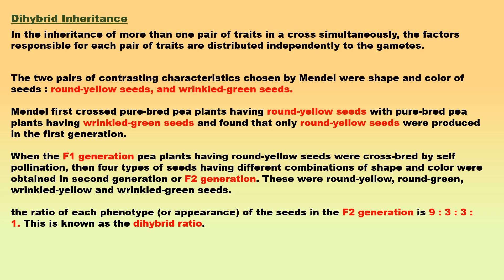Mendel first crossed purebred pea plants having round yellow seeds with purebred pea plants having wrinkled green seeds and found that only round yellow seeds were produced in the first generation. No wrinkled green seeds were obtained in the F1 generation. From this it was concluded that round shape and yellow color of the seeds were dominant traits over the wrinkled shape and green color. When the F1 generation pea plants having round yellow seeds were crossbred by self-pollination, four types of seeds having different combinations of shape and color were obtained in the F2 generation: round yellow, round green, wrinkled yellow, and wrinkled green seeds.